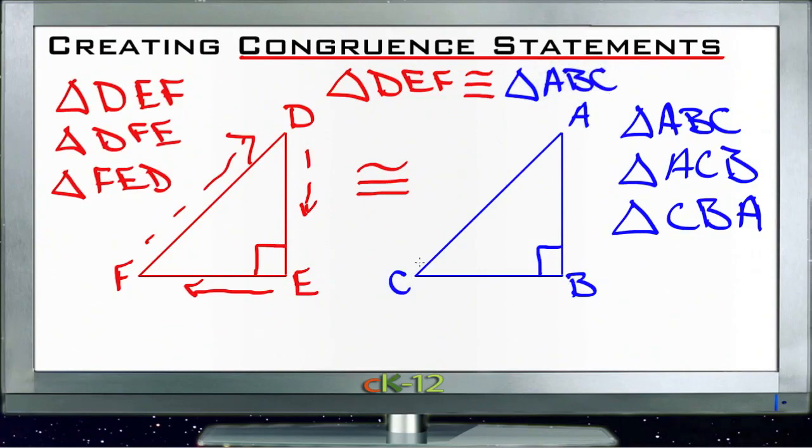I'm still going in the same direction around the same description of the triangle. That tells me, as I'm looking at this information, that D corresponds to A and F corresponds to C, and so on and so forth.